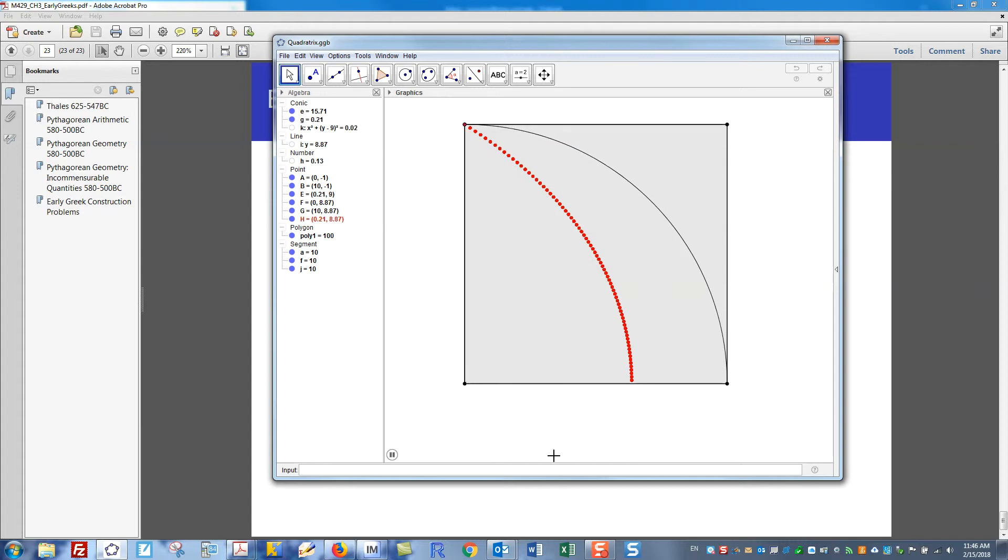So if you want to think about what this thing is doing, the way I think about it is that it's mapping distances to angles. So for example, if I pause right here, then I can see that this has fallen half the distance of the square, so that must mean that I must be at half the opening of the angle.